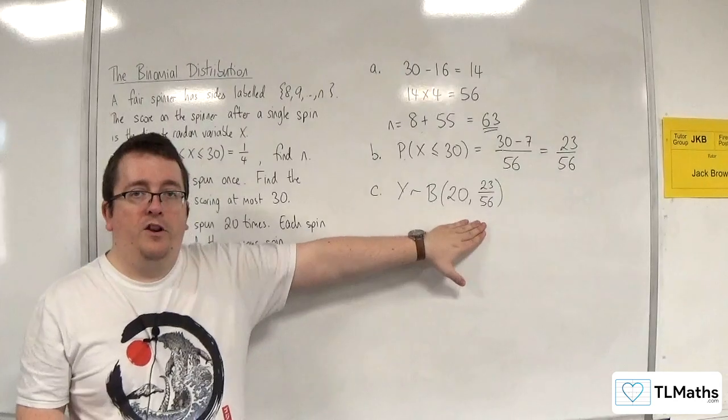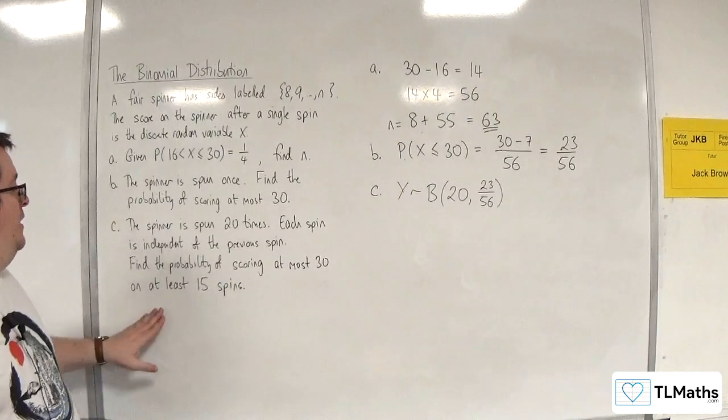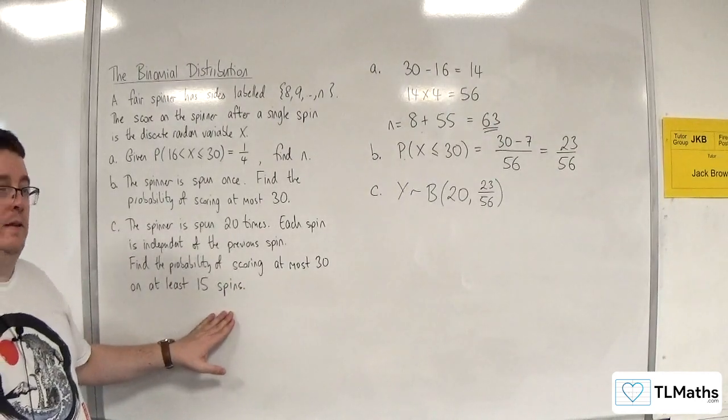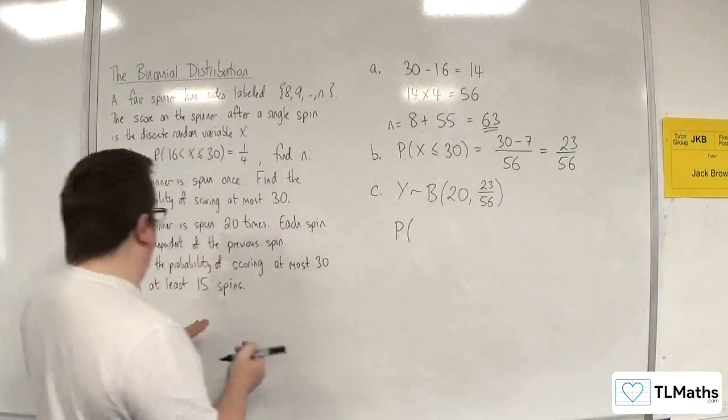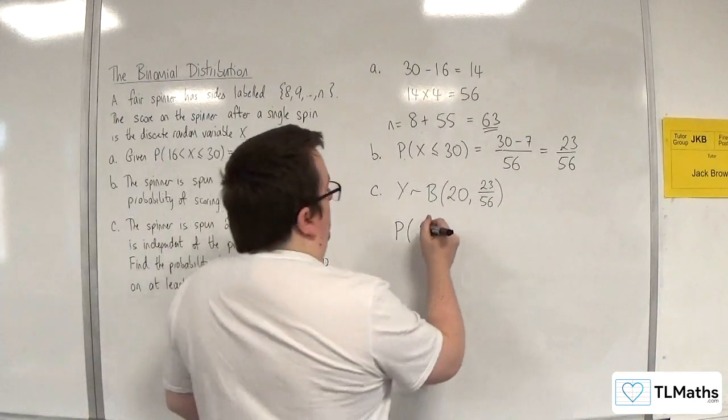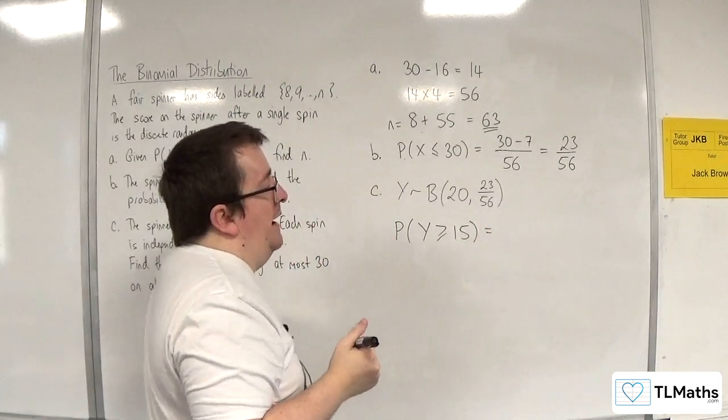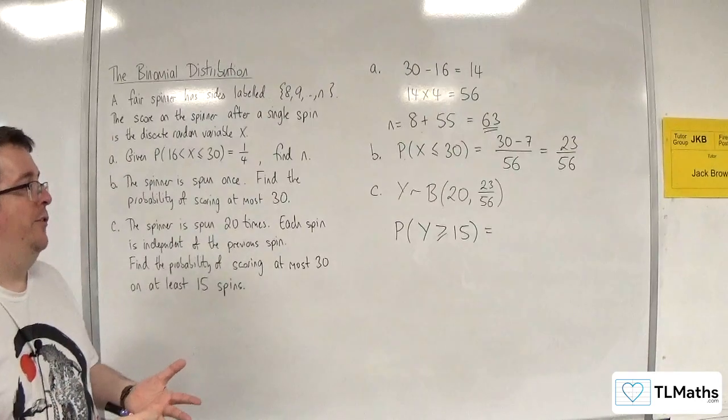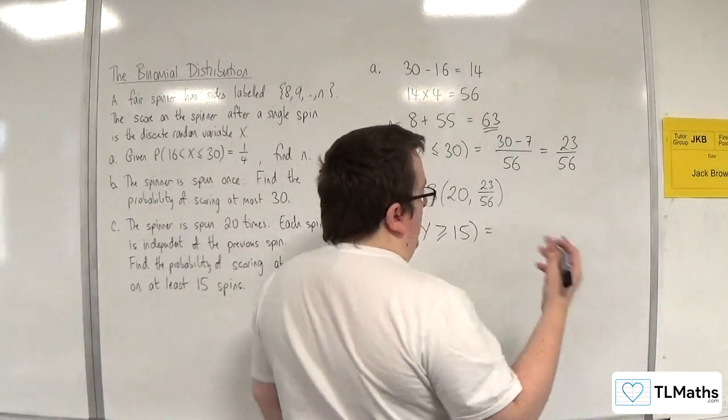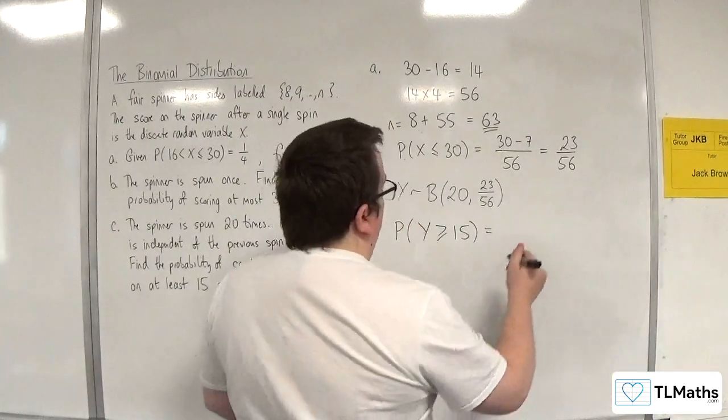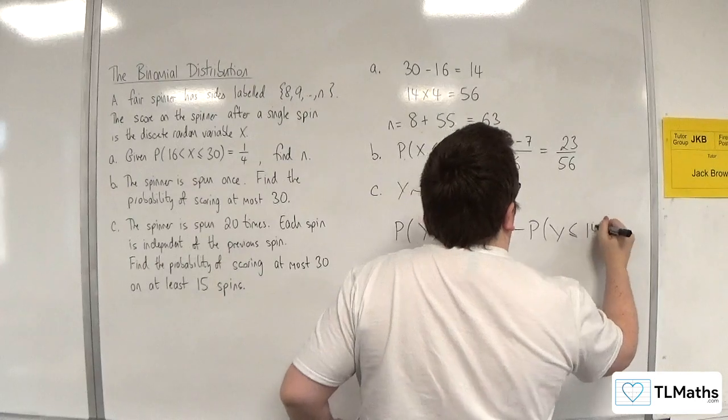We're told each spin is independent of the previous spin, so binomial distribution, n independent trials. Find the probability of scoring at most 30 on at least 15 spins. So at least 15, we want y to be greater than or equal to 15. Now on a NumWorks or Casio CG50 you'd be able to work that out directly. Unfortunately I'm just going to be using the ClassWiz, so I've got one take away the probability of y being less than or equal to 14.